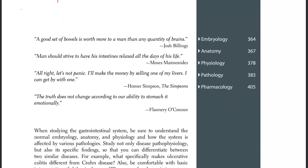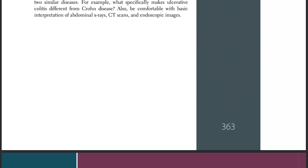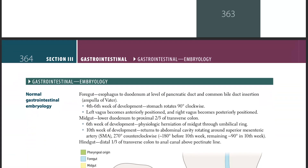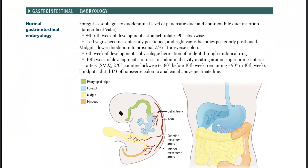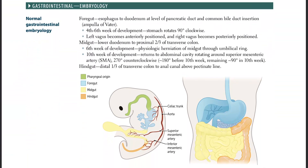Let's start with GIT. So let's start with the first thing here — the embryo of GI. So normal GIT embryology: we have three things to think about when we think about the embryology of GIT. One thing is the foregut, the midgut, and the hindgut.